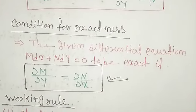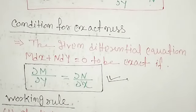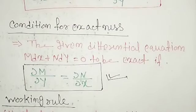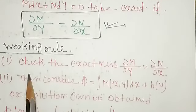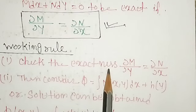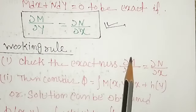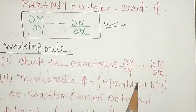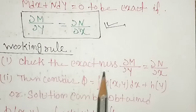Now, there are working rules: once the given differential equation in the form of M dx plus N dy is exact, we find the general solution. First, you have to check whether the given first order first degree differential equation is exact or not — that is, ∂M/∂y = ∂N/∂x. You differentiate M with respect to y and N with respect to x, and if their partial derivatives are equal, the given differential equation is exact.